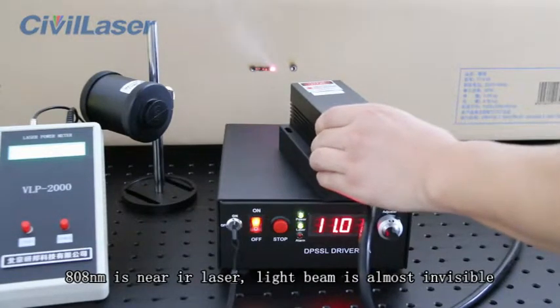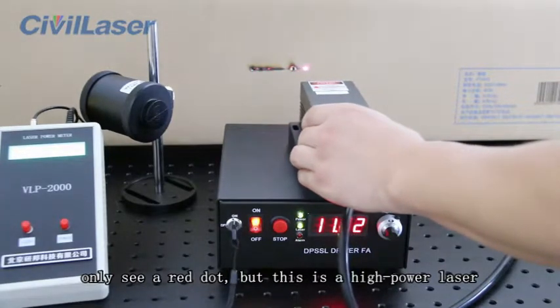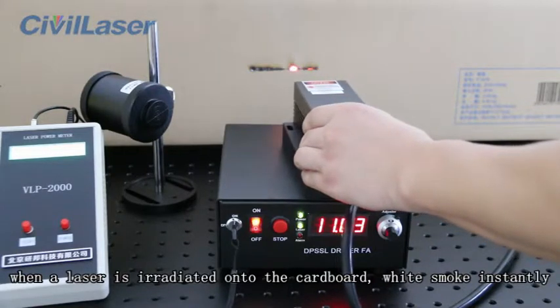808 nanometers is near-infrared laser. The beam is almost invisible, you only see a red dot, but this is a high-powered laser. When the laser is irradiated onto cardboard, white smoke appears instantly.